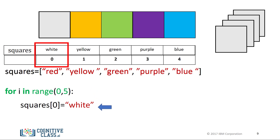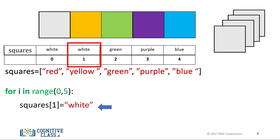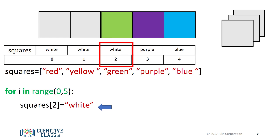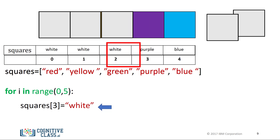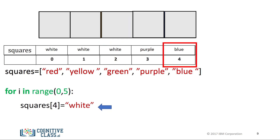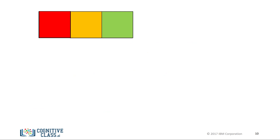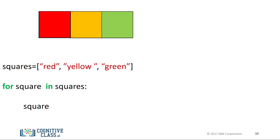The value of i is set to 0. Each iteration of the loop starts at the beginning of the indent. We run everything in the indent — the first element in the list is set to white. We then go to the start of the indent again, progress down each line, and when we reach the line to change the value of the list, we set the value at index 1 to white. The value of i increases by 1. We repeat the process for index 2, and continue for each index until we have reached the final element.